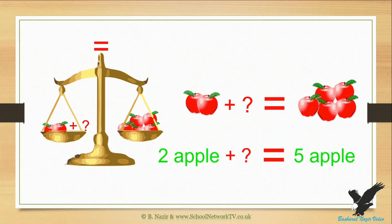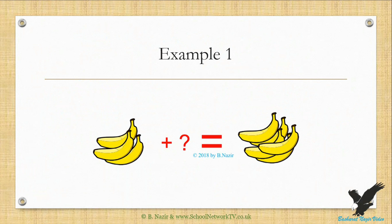In this example we have bananas on either side of the equation. On the left side we have three bananas and on the right side we have five bananas, so there is no balance on both sides. To make both sides equal we need to add two bananas to the left side.